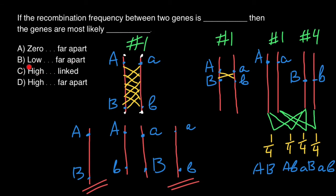Next: if recombination frequency is higher, that means genes are linked. Actually, the highest recombination frequency we can get is when genes are on different chromosomes. The higher the recombination frequency, the harder it is to say genes are linked. So the best answer would be: if recombination frequency is higher, that means genes are far apart. This is going to be our choice.